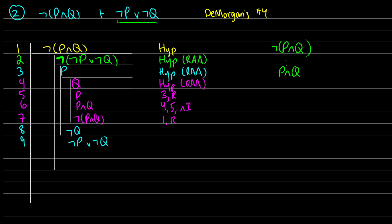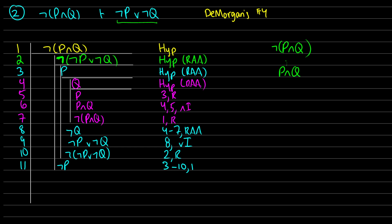Let me label these lines 8 and 9. Line 8 — from lines 4 to 7 — that was RAA; and ¬P∨¬Q in line 9 we're doing OR introduction. Remember, line 2 was our assumption of ¬(¬P∨¬Q). So from line 2, we're reiterating that. Now we get a contradiction because we have ¬P∨¬Q and we have ¬(¬P∨¬Q). So in line 11, we can exit the subproof and get ¬P — because from lines 3 to 10, we've used proof by contradiction to get ¬P.